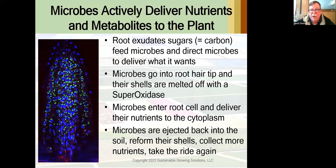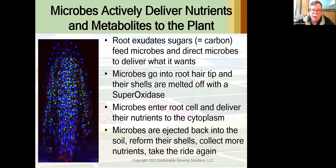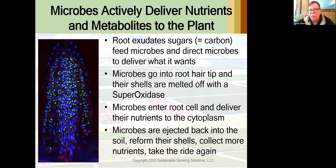Only recently has science been able to explain exactly the mechanism of how this is happening. At the very end of the root hair there's basically a portal, and the microbes go into that tip. Inside the tip of the root is a super-oxidase compound which literally melts the shell off the outside of the microbe. The microbe goes into the cytoplasm of the root and delivers its nutrients directly to that cell. After that exchange happens, they're ejected back out of the root, reform their cells, collect more nutrients, and they do it again. This is why it's so important to have great soil biology.